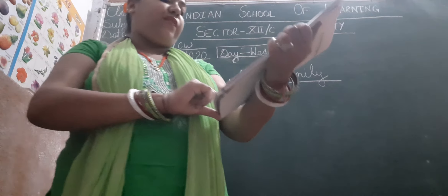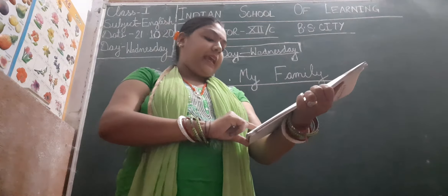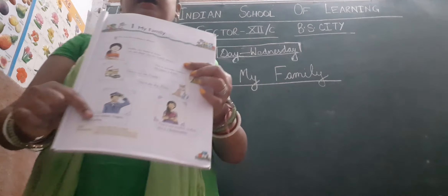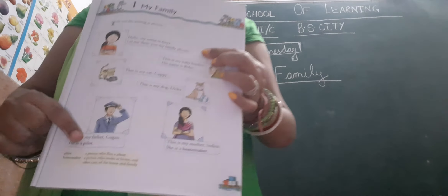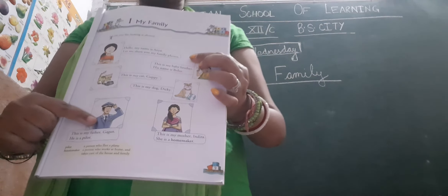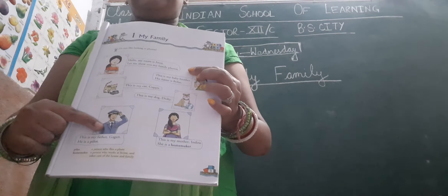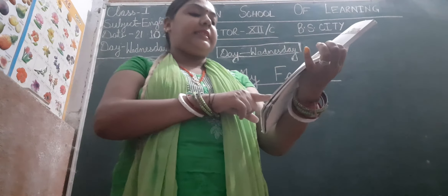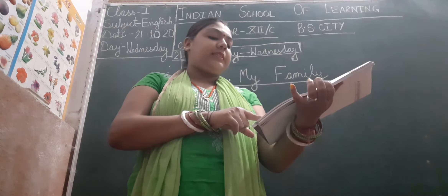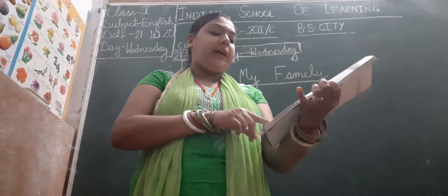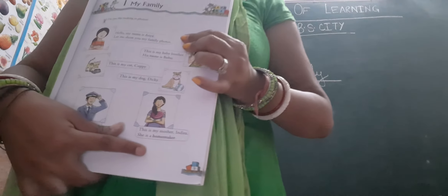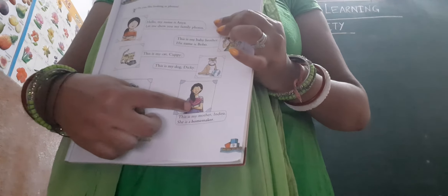This is my father Gagan and he is a pilot. Ye mere papa hain. He is a pilot. His name is Gagan. And next, this is my mother Indira. She is a homemaker. Ye meri mother hai jo ki housewife hai.